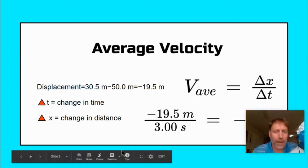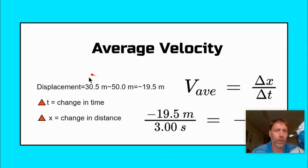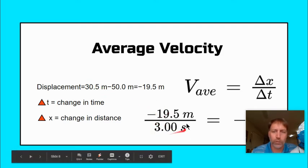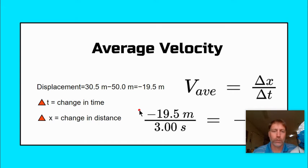So last time we talked about average velocity. Remember the average velocity was the total distance over the entire time you were traveling. So our last problem was a runner runs from 50 meters and runs to 30.5 meters on the field over the course of three seconds.